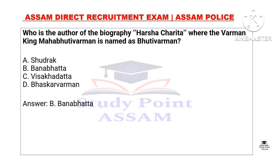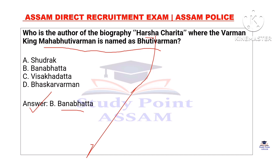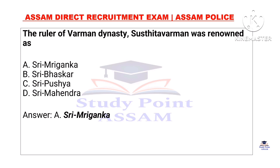Who is the author of the biography Harshacharita, where the Brahman king Mahabhati Brahman is named as Bhutibarman? What was the name of Bhutibarman? This was written by Banu Bhatta. The ruler of the Brahman dynasty, Sthitavarman, was renowned and the Brahman dynasty was named as Shri Mrignanka. The Sthitavarman was named as Bhutibarman.